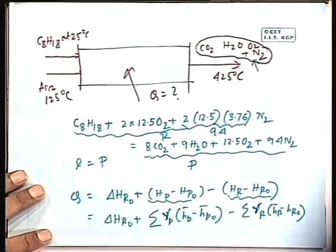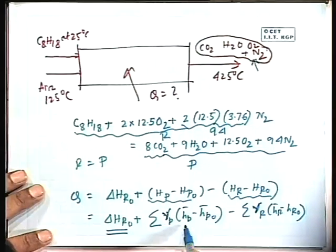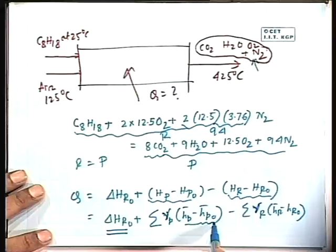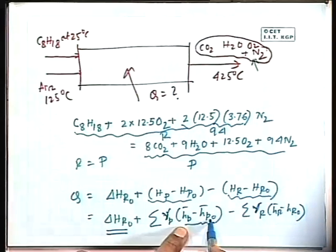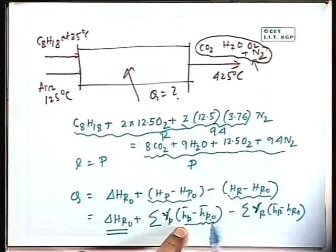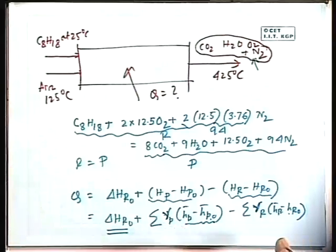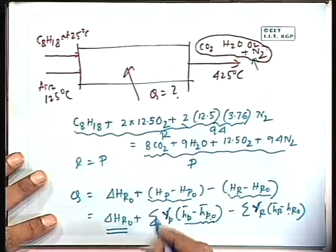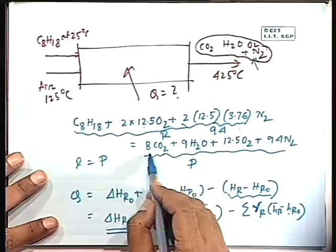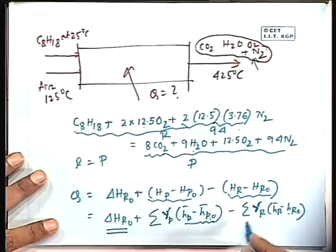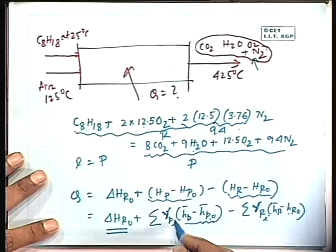Substituting values: ΔH_R0 = −5.1 × 10⁶ kJ/kg-mol of C₈H₁₈. Products exist at 698 K (425°C); reactants: octane at 298 K (standard state), air at 398 K (125°C). For CO₂: 8×(H̄ at 698K − H̄_0). The value H̄ at 698K = −375 × 10³ kJ, H̄_0 = +393 × 10³ kJ (enthalpy of formation), so difference = −375 + 393 = 18 × 10³ kJ for CO₂.